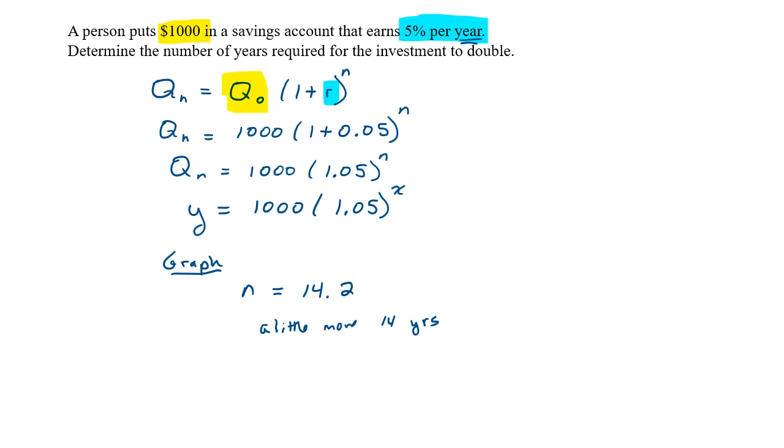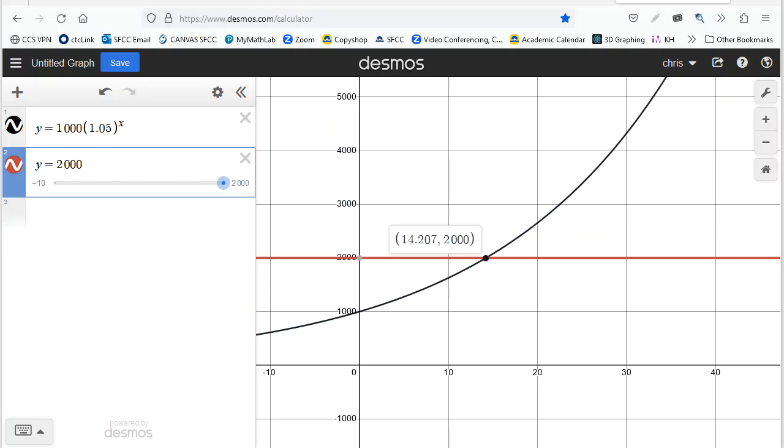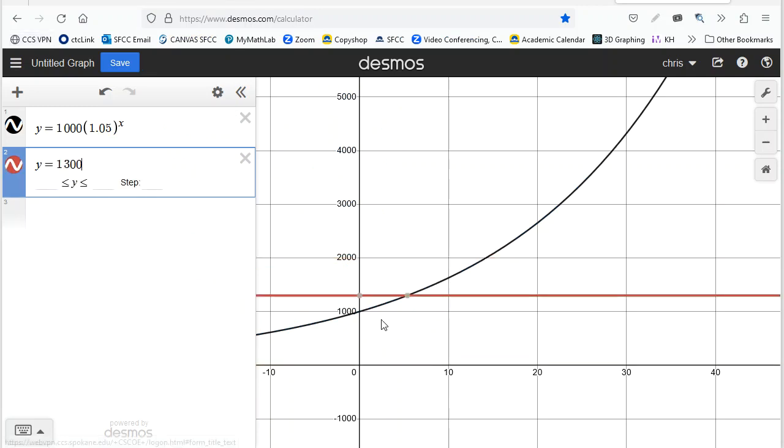And so whatever amount that you want to figure out. Let's say you want to figure out how much time it'll take before I have $1,300. Then you just put that at 13 and you click there. Five years, right? That's kind of cool.